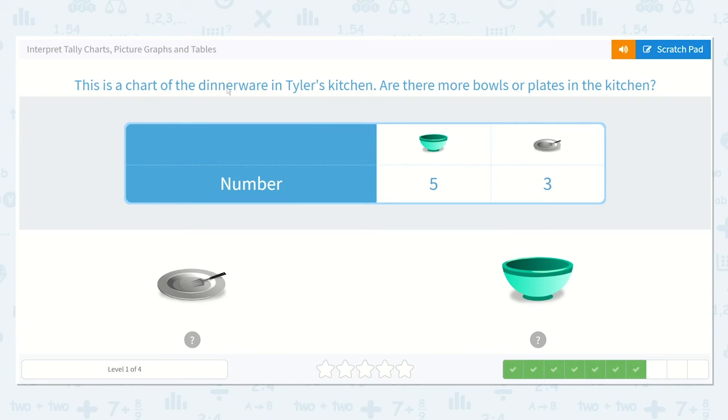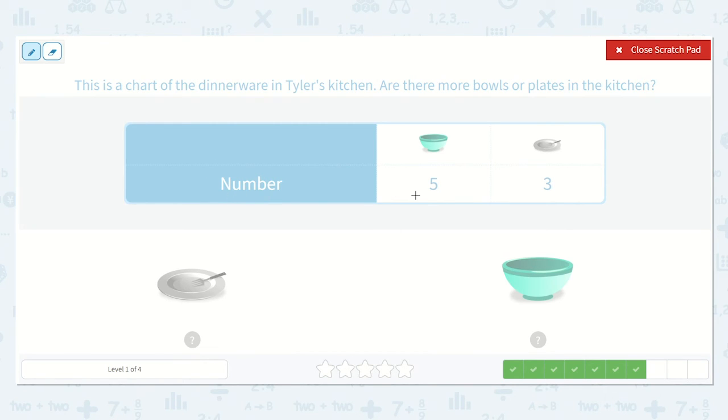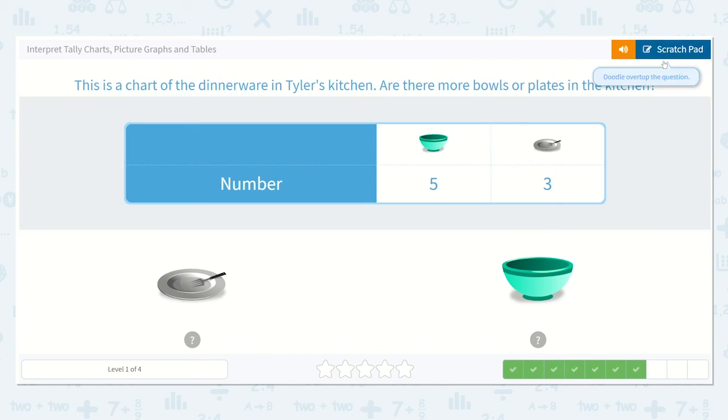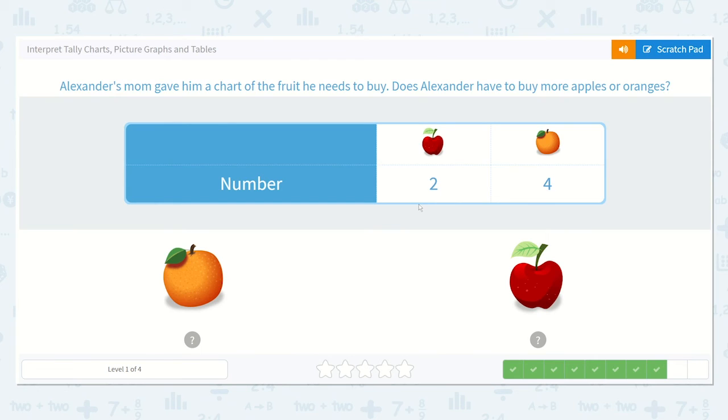This is a chart of the dinnerware in Tyler's kitchen. Are there more bowls or plates in the kitchen? So now it tells us the number. It says there are five, and there are three. So what is here? There are five what? Yes, bowls. And there are three plates. Well, they asked us, are there more bowls or more plates? Yes, more bowls. This is a larger number. Five is larger than three. That is more. So I know there are more bowls. So I'm going to click on the picture of the bowl. Wonderful.